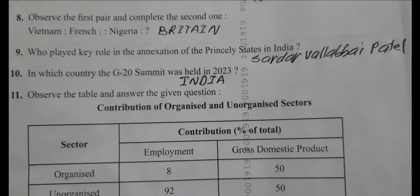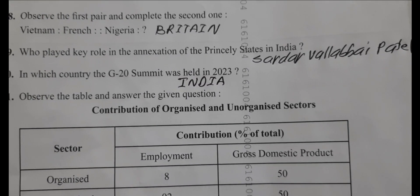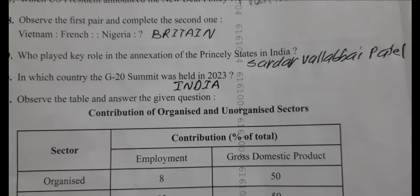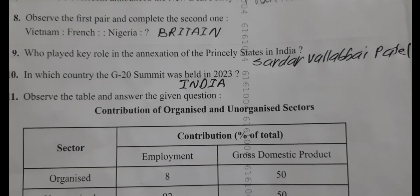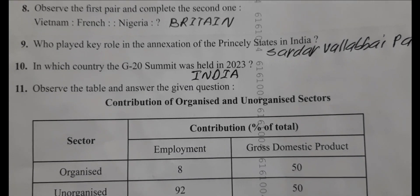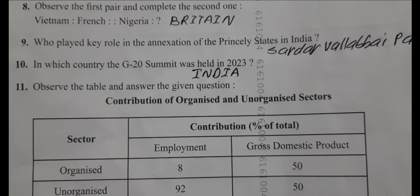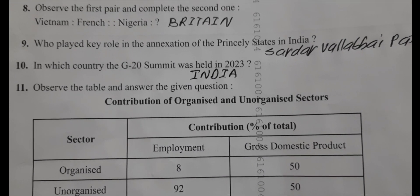Who played a key role in the annexation of princely states in India? The answer is Sardar Vallabhbhai Patel, the Iron Man of India. In which country was the G20 summit held in 2023? The answer is India.